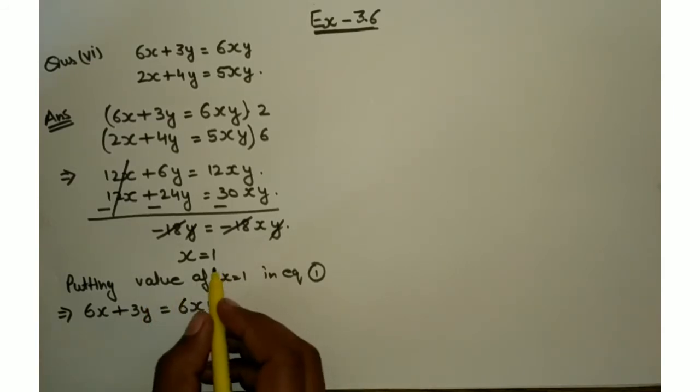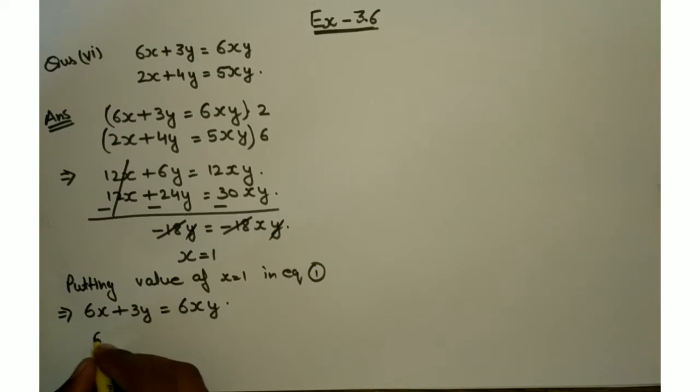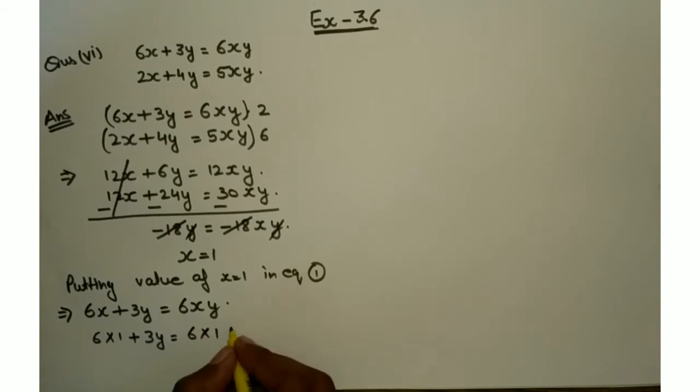Now x की जगह पे हमें 1 put करना है. So it will become 6 into 1 plus 3y equals 6 into 1 into y. Solving this, it will become 6 plus 3y equals 6y.